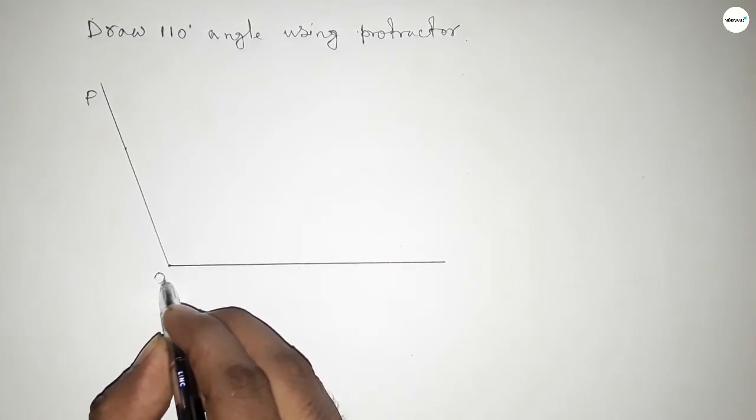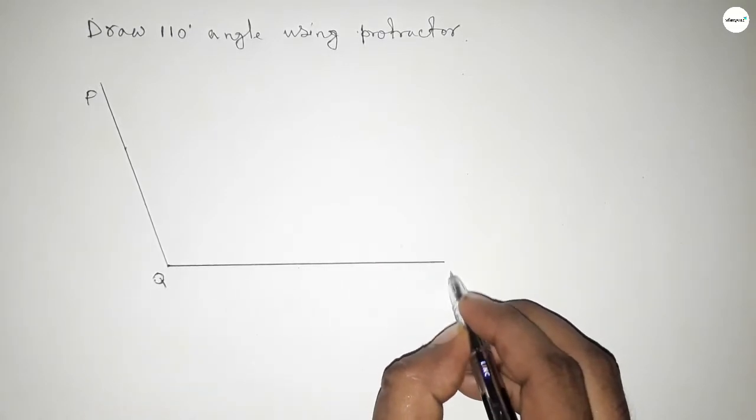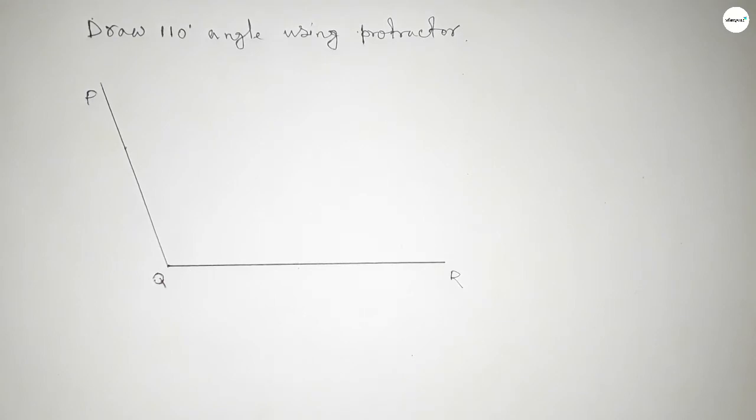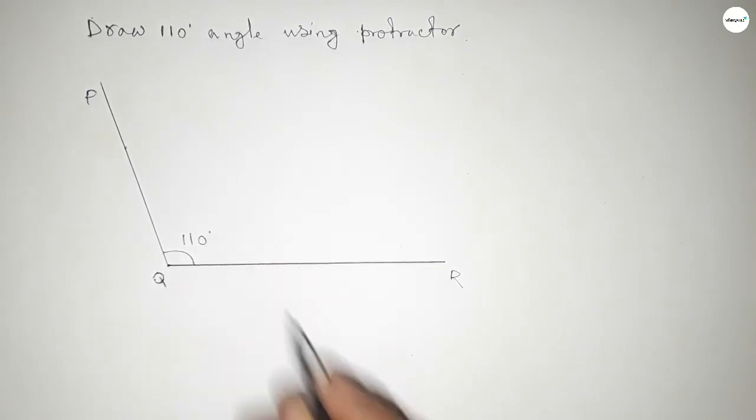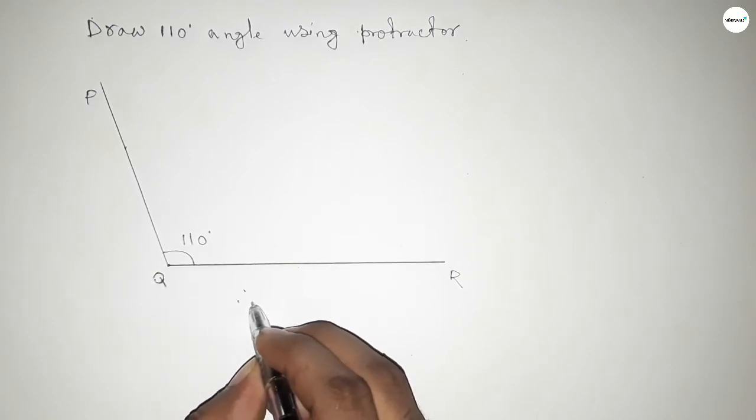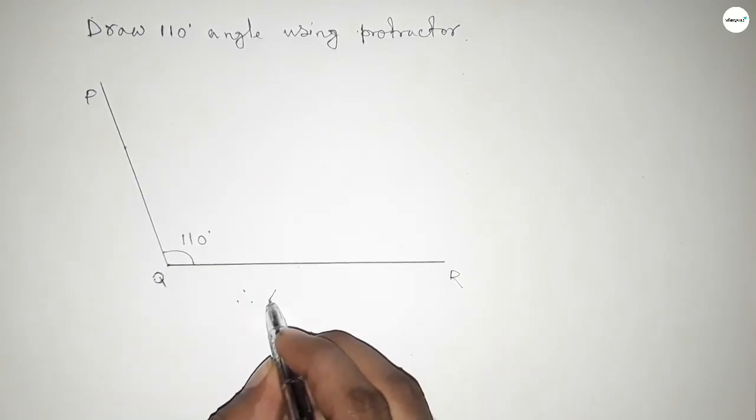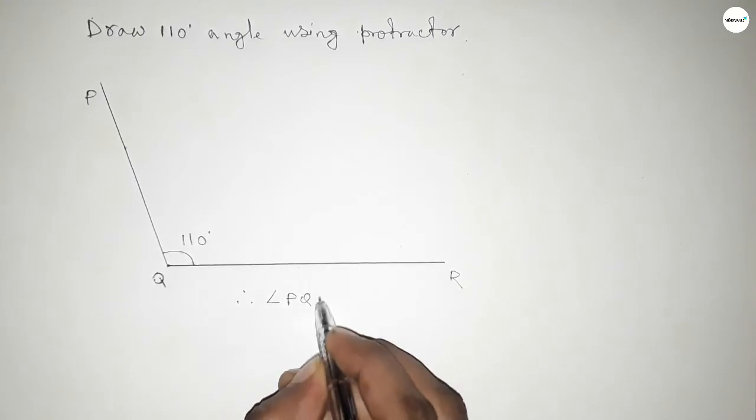This is P, Q, and this is R. So angle PQR equals 110 degrees. Therefore, angle PQR equals 110 degrees.